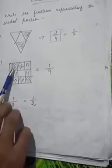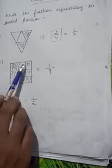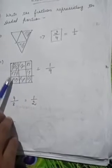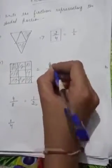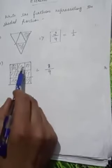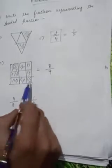Now the next question, the Shaded Region 1, 2, 3, 4, 5, 6, 7, 8. So what is the Shaded Region? 8 parts. 8 parts are Shaded and Total are 1, 2, 3, 4, 5, 6, 7, 8, 9. So 9 will be written here.